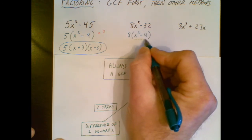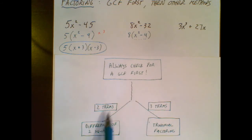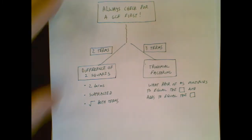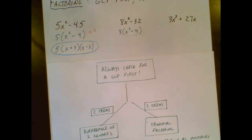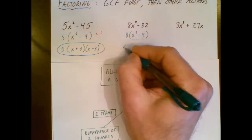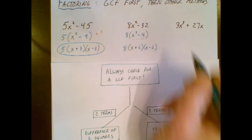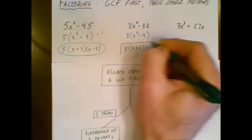Now I take a look at this piece. There's two terms, so I can follow the difference of two squares checklist. And I'll end up with x plus 2, x minus 2. And that's my final factored form.